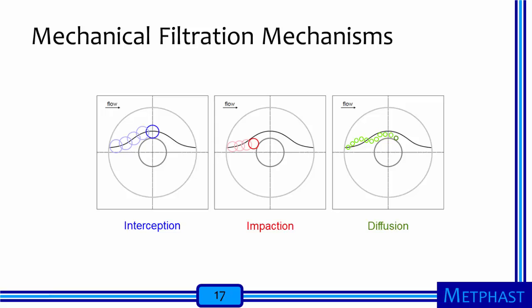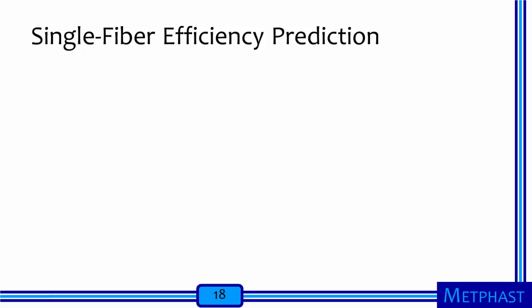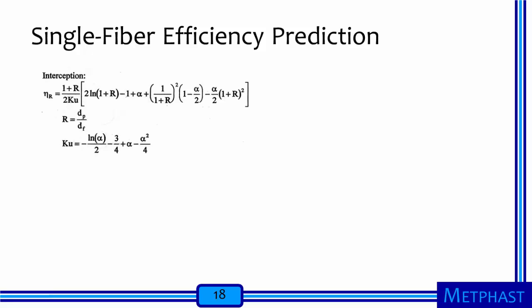Interception, impaction, and diffusion are the three most important mechanical filtration mechanisms. Equations have been developed to predict the efficiency of particle capture by single fibers for these three mechanisms. Interception efficiency, eta sub r, can be predicted by the equation (1 + r) / (2 × Ku) times a long expression in brackets. This expression contains three variables: R is the interception parameter (the ratio of the particle diameter to the fiber diameter), Ku is the Kuwabara number (a property of the flow field around the fiber), and alpha is the solidity or packing density of the filter.